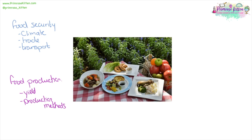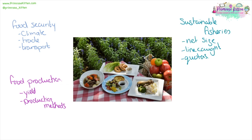We need to take into account ways to increase yields, for example using fertiliser, but then we also need to consider the impact that will have on the wider environment. We need to take into account production methods — are they land intensive? Are they good for the environment or not? As we are on islands, sustainable fishing is one way we can help ensure our food security.